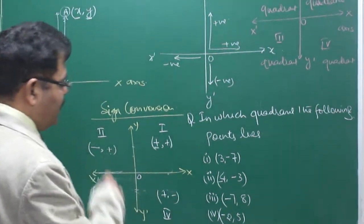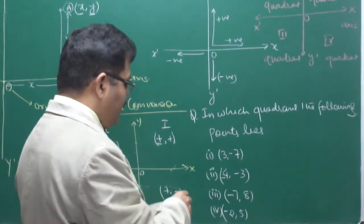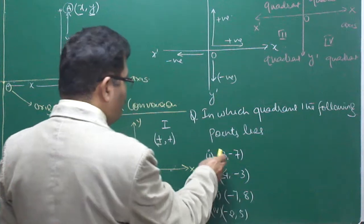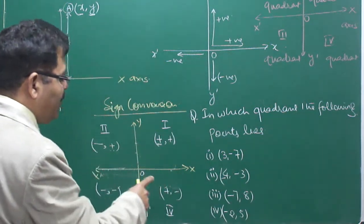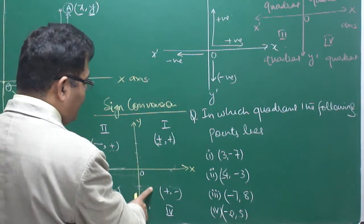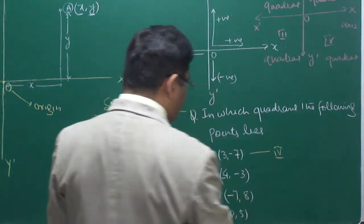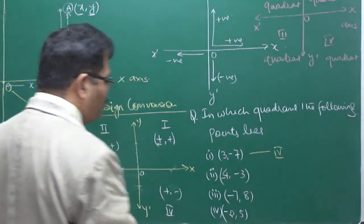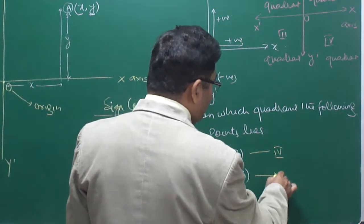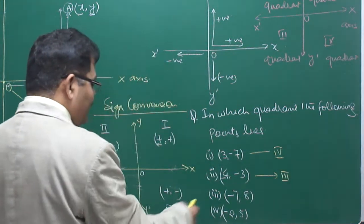For (3, −7): X is positive, Y is negative — positive, negative lies in the fourth quadrant. So this point lies in the fourth quadrant. For (−4, −3): both are negative — negative, negative lies in the third quadrant. So that point lies in the third quadrant.